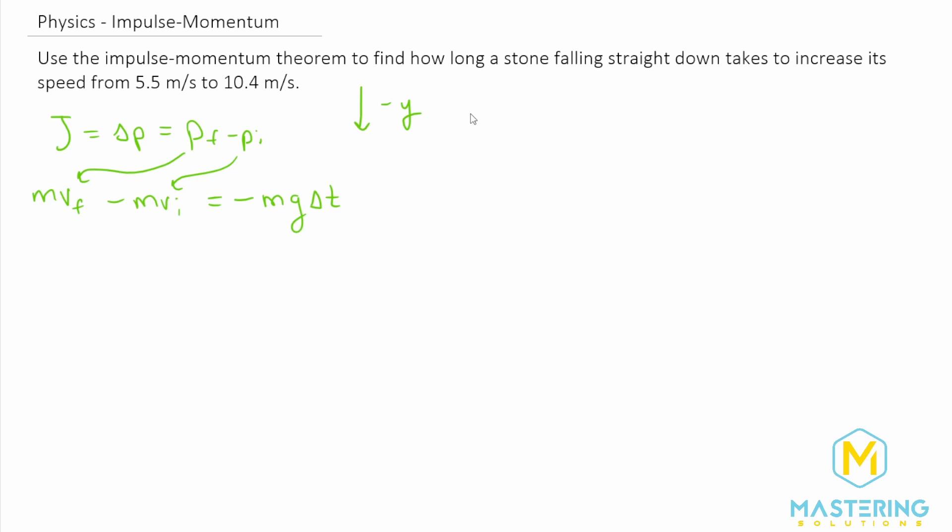So they want us to find what the change in time is to go from the initial velocity of 5.5 meters per second to the final velocity of 10.4 meters per second. So we need to isolate delta t.